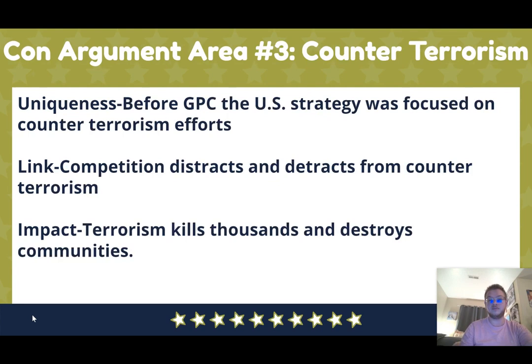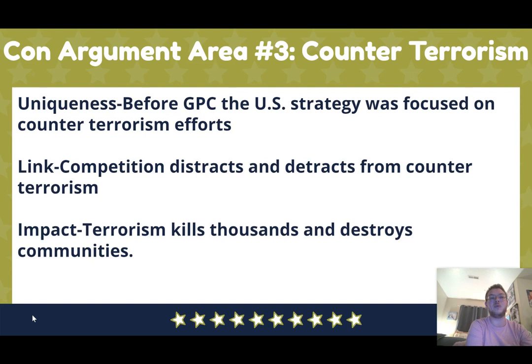The third con argument is counterterrorism — the reverse of the pro's terrorism argument. The pro says ending counterterrorism was good; this argument says it was bad. Before great power competition, we were stamping out terrorism and it was working. But competition distracts and detracts from counterterrorism efforts — we spend less money and focus on it, and we don't work with Russia and China to stop terrorism. The impact is reasons why terrorism is bad: it kills thousands, destroys communities, causes civil wars, and suppresses human rights.